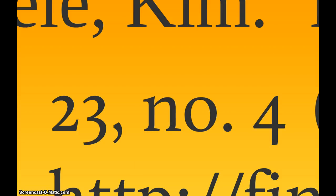The next portion of this citation is the volume number and the issue number. Note that between the volume number and the issue number there is a comma, and preceding the issue number there is an abbreviation for the word number: no. (N-O period).